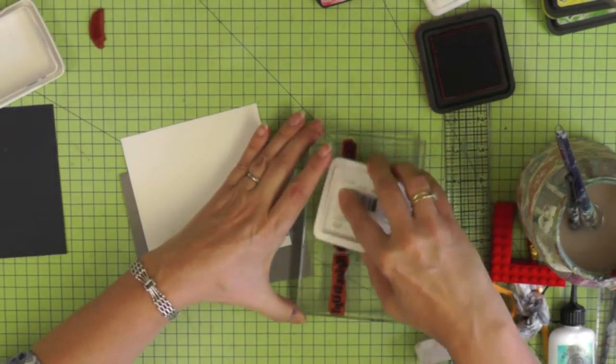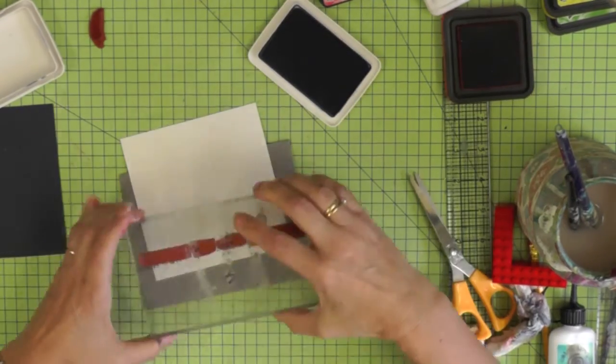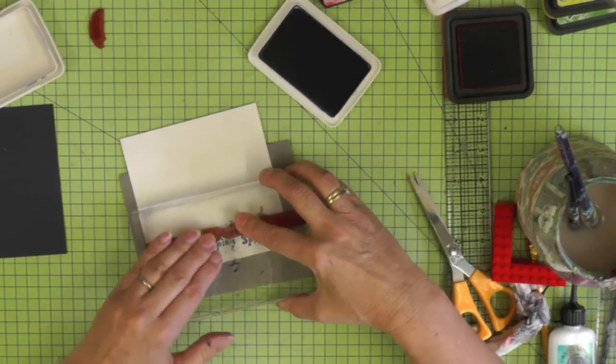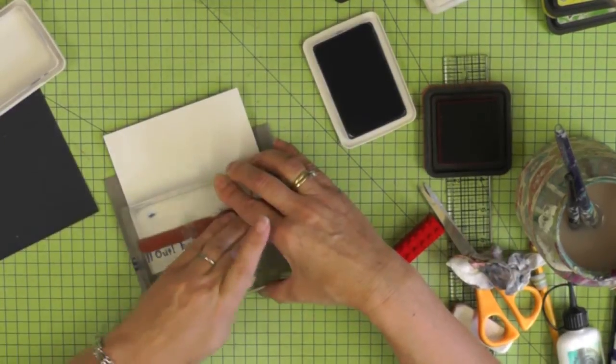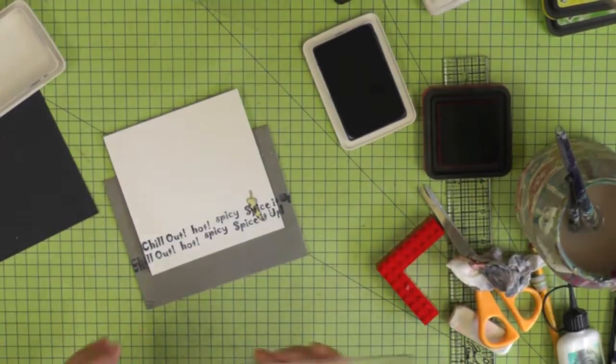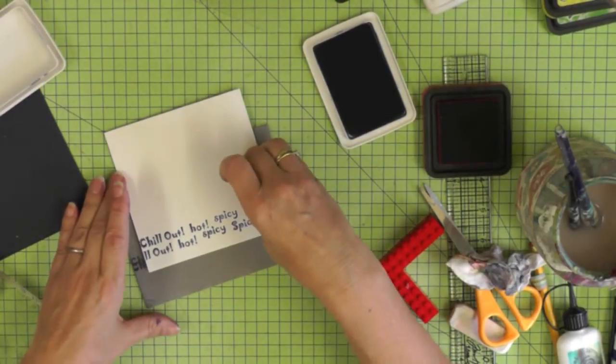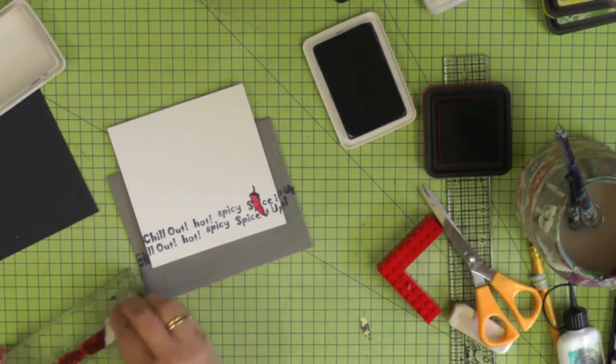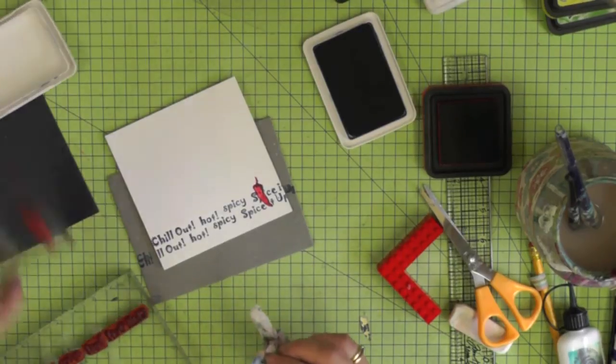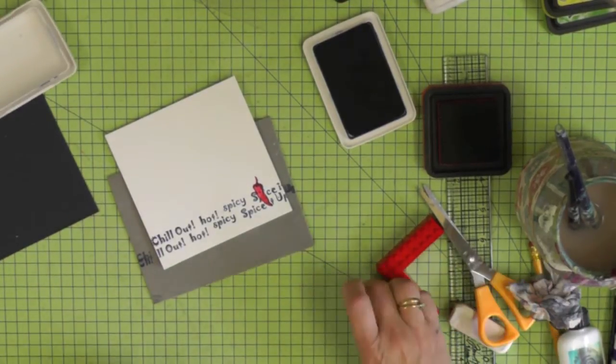When you do the second stamping to create a stripe of text across the bottom of your card just slightly stagger it and move it slightly to the right. Then you can remove that little chili mask. Make sure you keep it with your stamps because that one's easy to lose and you're ready to attach the inner to the center of your card.